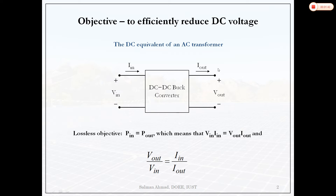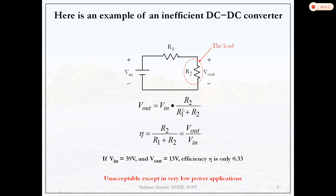In all DC-DC converters, the efficiency is very high, so input power can be assumed equal to output power. Input DC voltage times input DC current equals output DC voltage times output DC current. The ratio Vout/Vin equals Iin/Iout — this is the voltage conversion relationship.